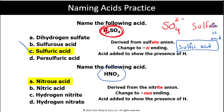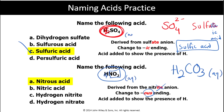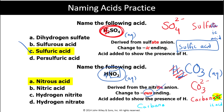For HNO2 again: NO2 one-negative, we call that nitrite, change '-ite' to '-ous acid', so we get nitrous acid. How about H2CO3? Drop H, we have CO3 two-negative — we call that carbonate. '-ate' is changed to '-ic acid'. So the name of that compound is carbonic acid.